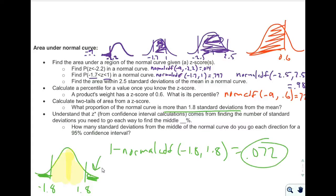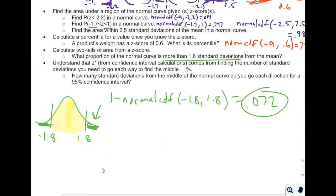Last thing says, understand that z* from the confidence interval calculation comes from finding the number of standard deviations you need to go each way to find the middle, let's say 95%, 99%, whatever. Example with that. How many standard deviations from the middle of the normal curve do you go each direction for a 95% confidence interval?